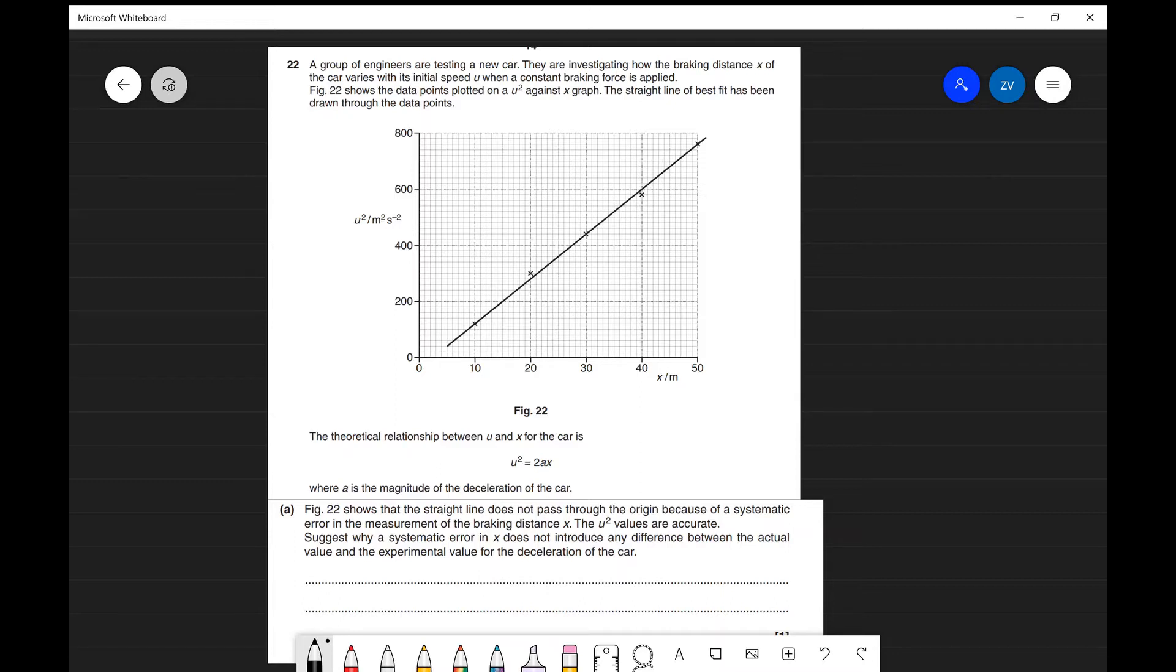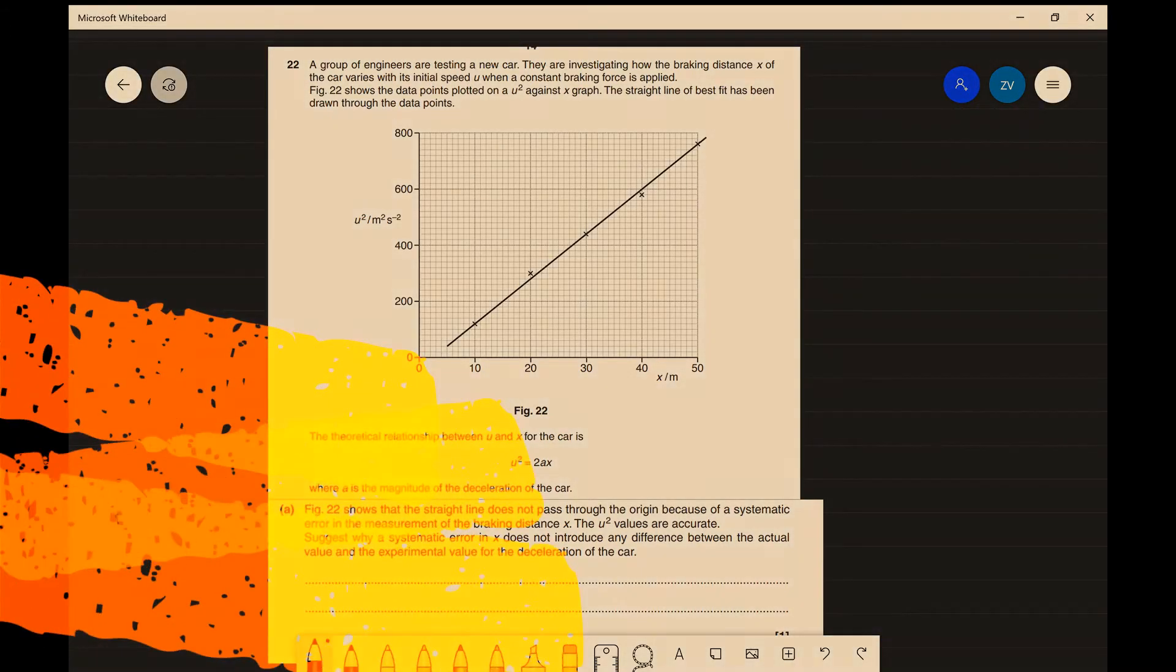We've got a graph over here. A group of engineers are testing a new car and we've got a graph of v squared against the distance x on the x-axis. We've got quite a lot of information here. The best course of action for you guys would be to pause this video and attempt this question independently.